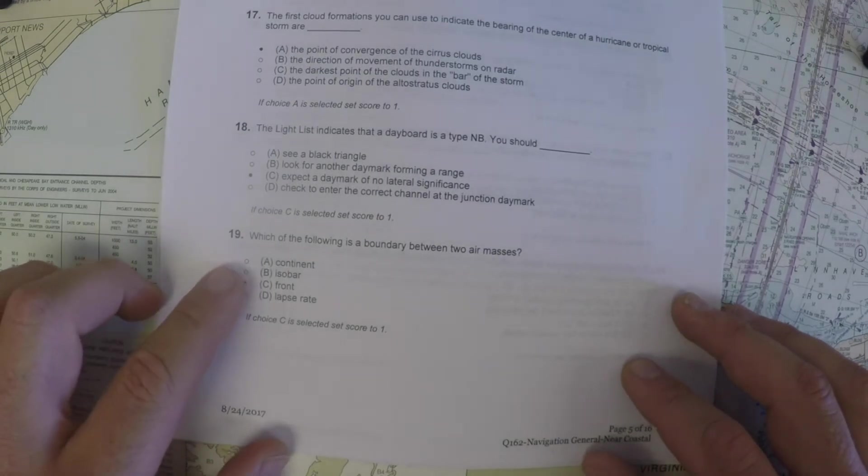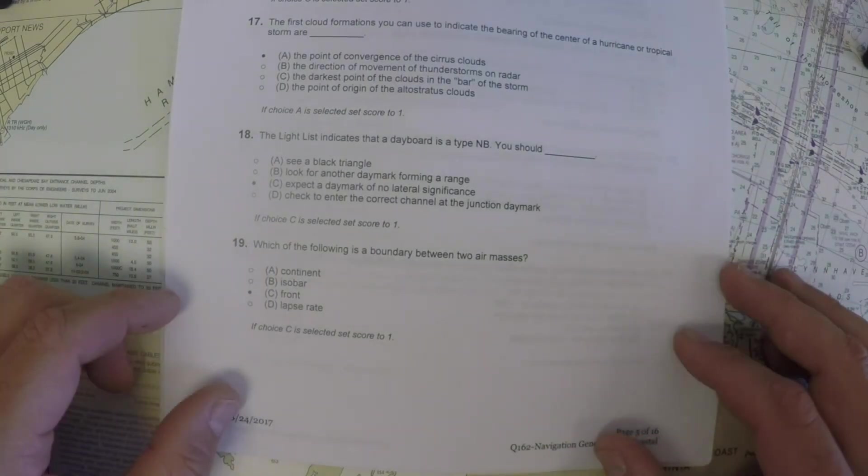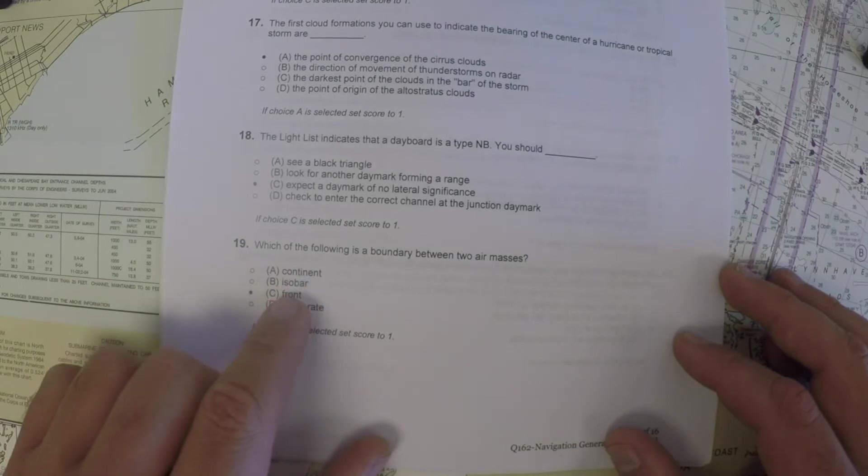All right, the next question, number 19, which of the following is a boundary between two air masses, and your choices are continents, isobars, fronts, and lapse rate.